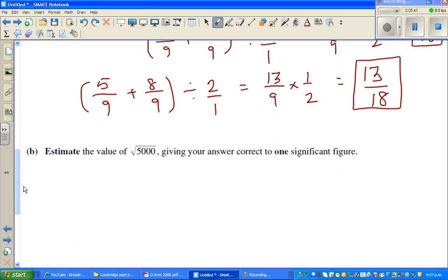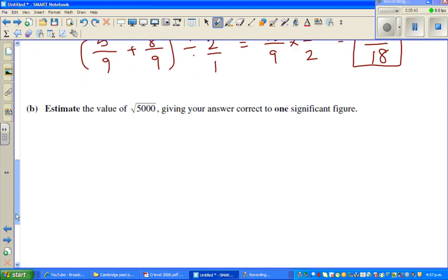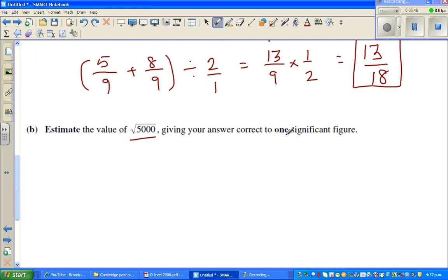And finally, estimate the value of square root of 5000 up to 1 significant figure. So this is only an estimation, you don't want to exactly find. So I know 40 squared is 1600. 50 squared is 2500. 60 squared is... I'll explain how to do this, it's pretty easy. 70 squared is 4900.